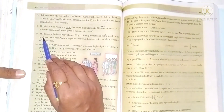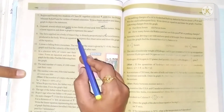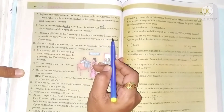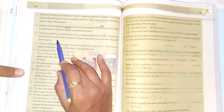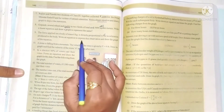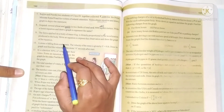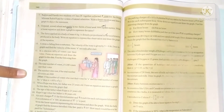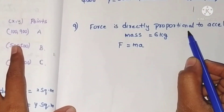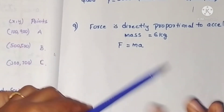Ninth problem: The force applied on a body of mass 6 kg is directly proportional to the acceleration produced in the body. Write an equation to express this observation and draw the graph of the equation. It is given that force is directly proportional to acceleration.